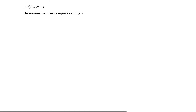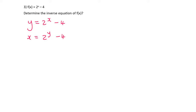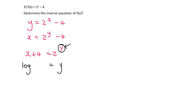To do an inverse, switch the x's and y's around. Rewrite using y, then switch x and y. Now get y alone. If y is an exponent, we have to use logs. So we end up with y equals log. The number that was with the y comes first as the base, and then everything else goes in a bracket.